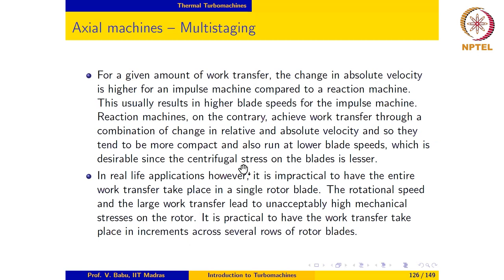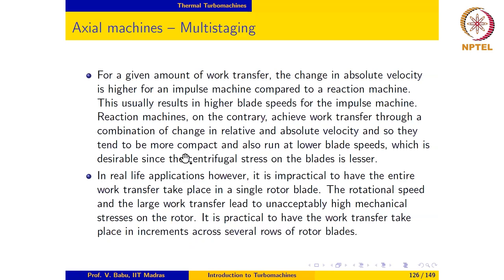For a given amount of work transfer, the change in absolute velocity is higher for an impulse machine than for a reaction machine, which usually results in higher blade speeds for the impulse machine. Reaction machines achieve work transfer through a combination of changes in relative and absolute velocity, so they tend to be more compact and can run at lower blade speeds, which lessens the centrifugal stress on the blades.